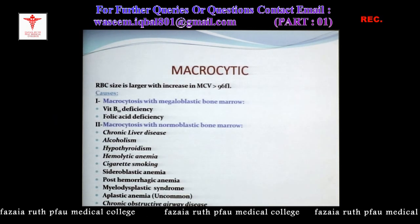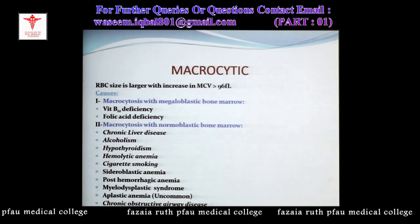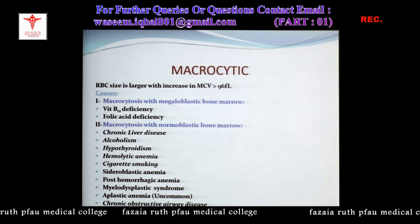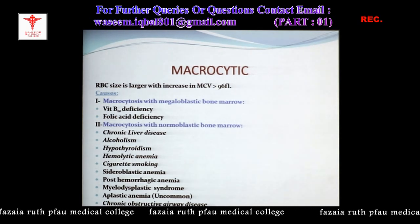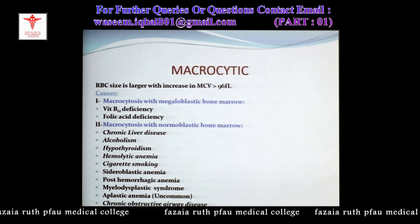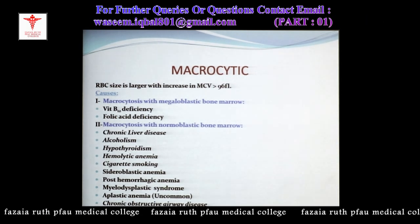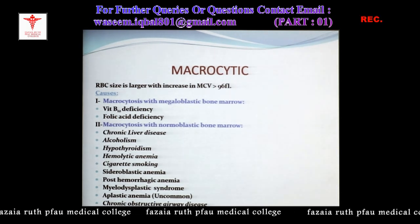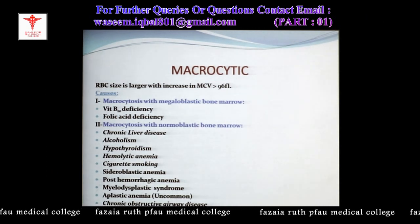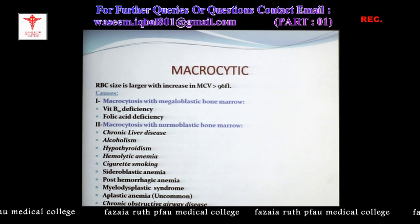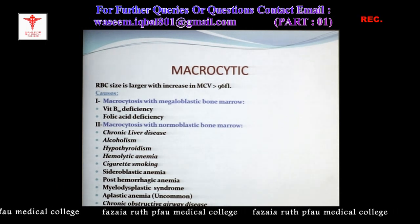The third important group is macrocytic anemia. The normal MCV range is 80–96 femtoliters; above 96 (typically around 100 femtoliters) is called macrocytosis. We conventionally divide this into two broad categories: macrocytosis with megaloblastic bone marrow — due to vitamin B12 or folic acid deficiency — and macrocytosis with normoblastic bone marrow.